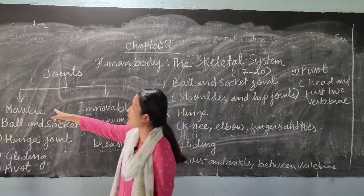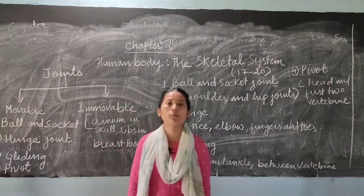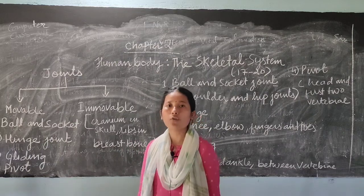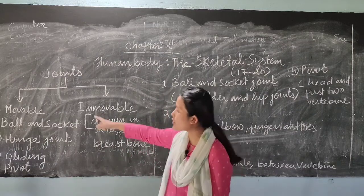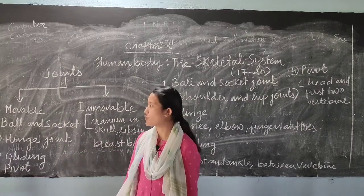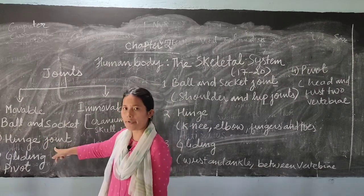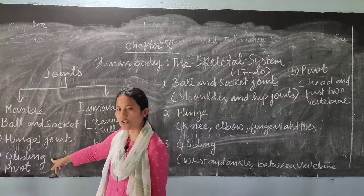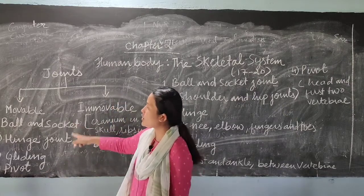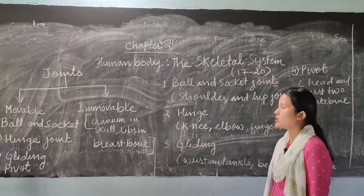Next we will be considering movable joints. Movable joints are those joints which allow the movement of body parts. Now your movable joints can be further divided into four types: ball and socket joints, hinge joint, gliding joint, and pivot joint. Let us consider each one — where they are present and what kind of movement they show.